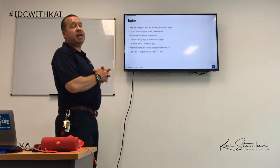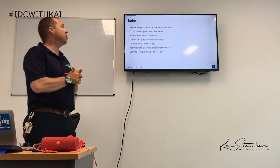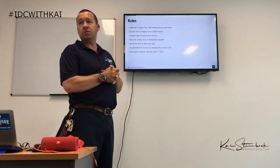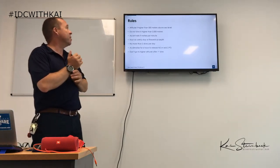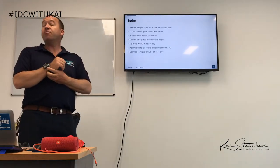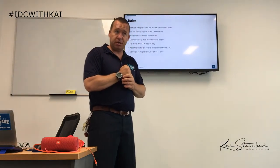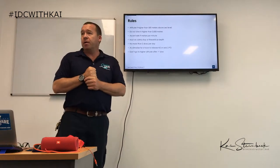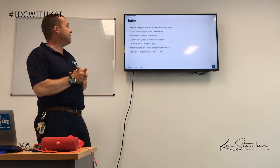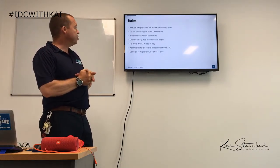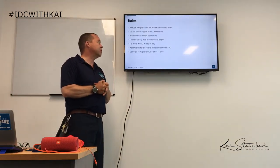Altitude diving applies to anything higher than 300 metres above sea level — you should not go any higher than 3,000 metres. Our normal ascent rate is 18 metres per minute; at altitude, we halve that to 9 metres per minute, because the pressure gradient change becomes bigger. We must do a safety stop at a theoretical depth, no more than two dives per day, and you should acclimatise yourself for six hours to release nitrogen.